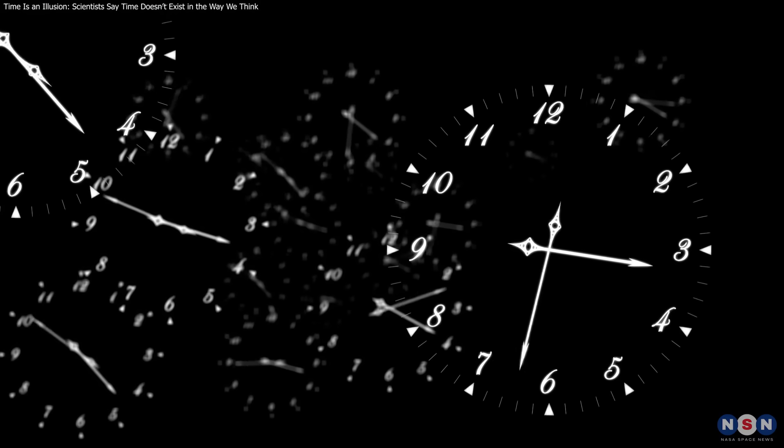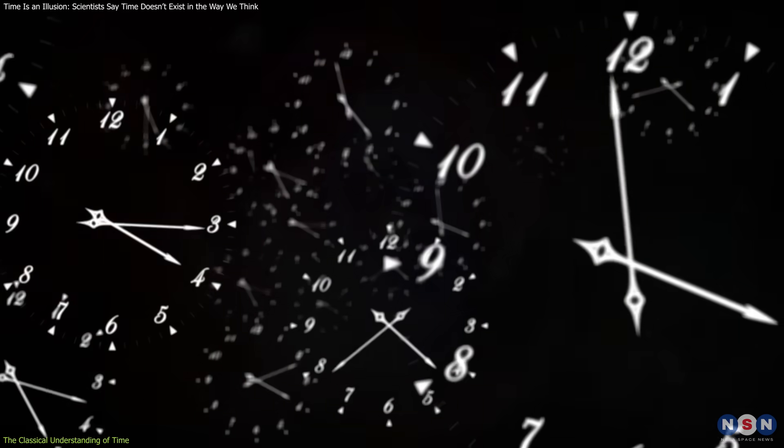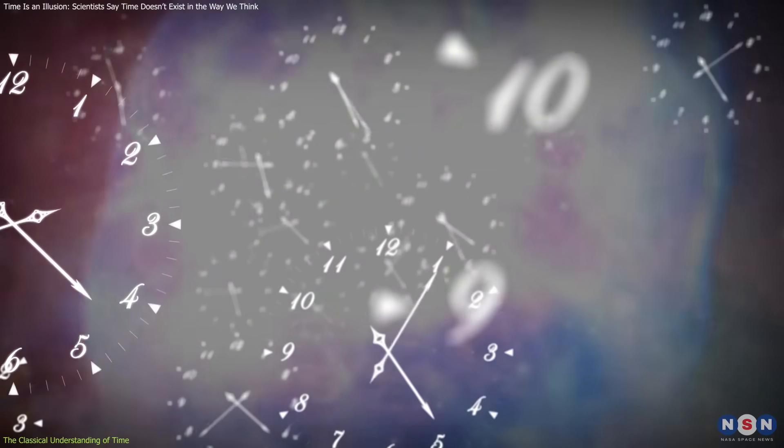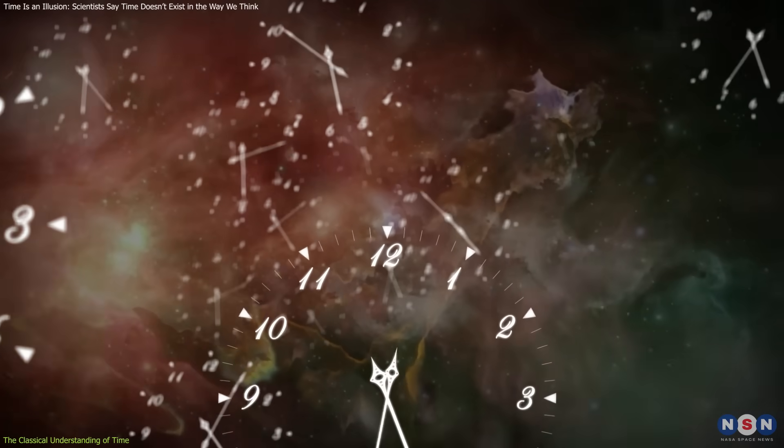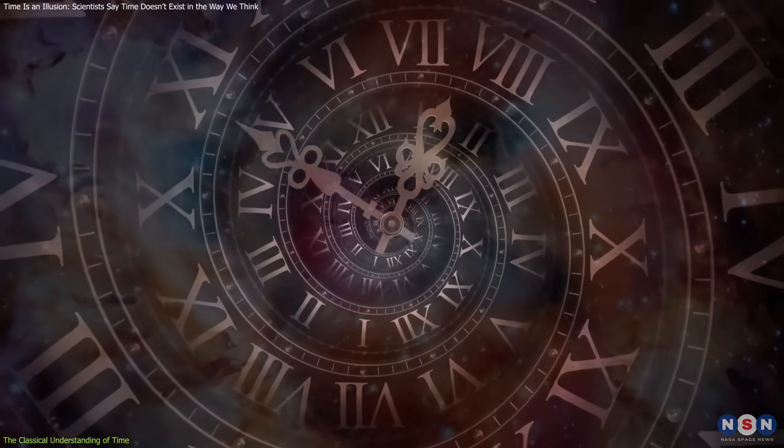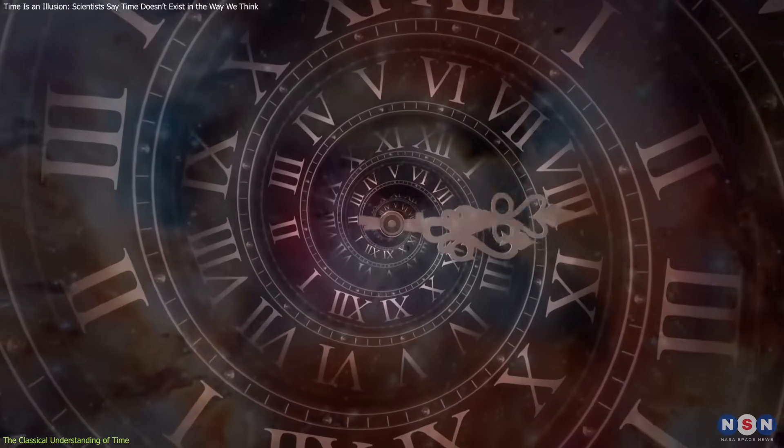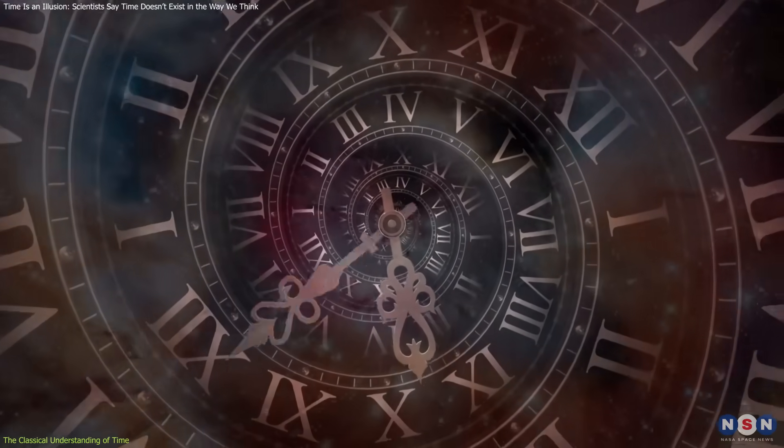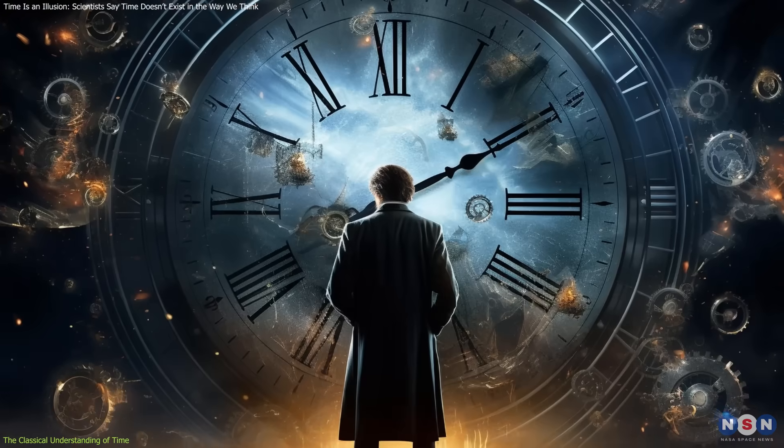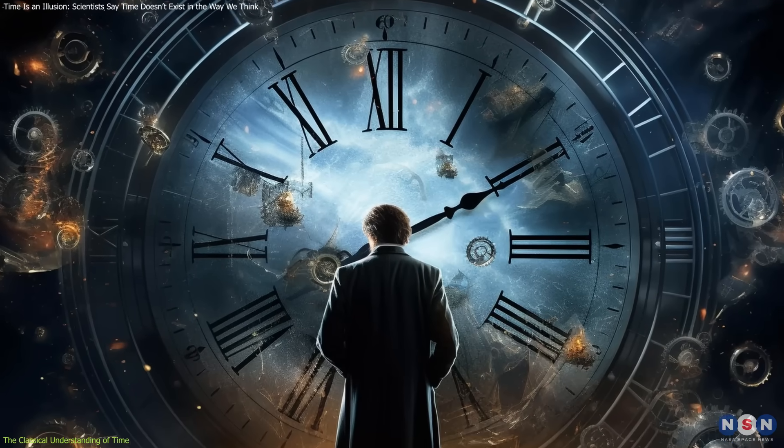Traditionally, time has been viewed as a constant and ever-flowing river moving uniformly from the past through the present and into the future. In classical physics, time is an absolute backdrop against which events unfold, independent of the observer or the events themselves.